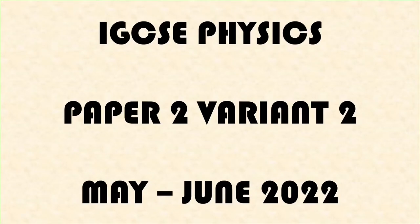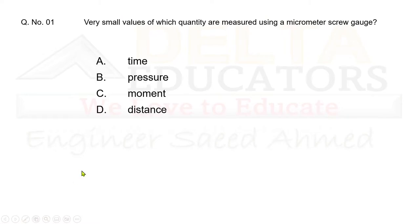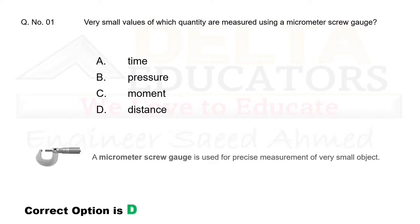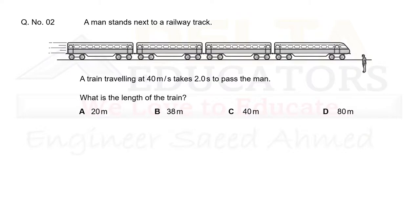IGCSE Physics Paper 2 Variant 2 May June 2022. Question 1: Very small values of which quantity are measured using a micrometer screw gauge? Option A is Time — we use a watch for time, so A is incorrect. B is Pressure — we use a barometer, so B is incorrect. C is Moment — we use a meter rule with weights, so C is incorrect. D is Distance — correct, we use a micrometer screw gauge to find precise measurements of very small objects. Correct option is D.